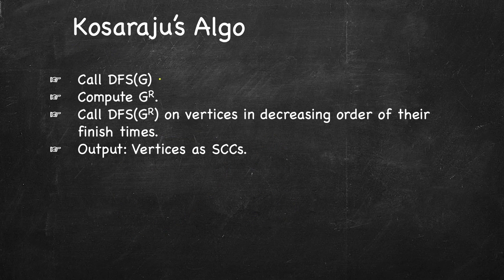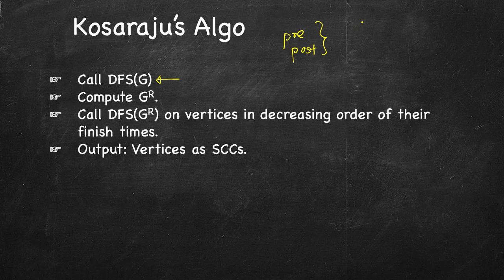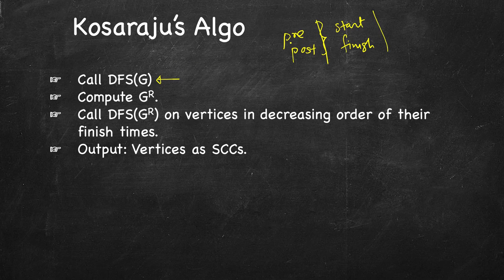Kosaraju's algorithm says: first, call DFS on the original graph. If you remember, we had seen pre and post visit times for different nodes while doing DFS — also called start and finish times, or arrival and departure times. Once we have calculated the pre and post times, or start and finish times, of different vertices, we find a new graph.